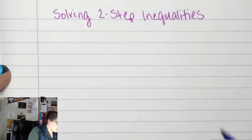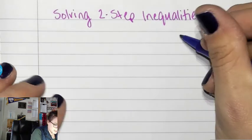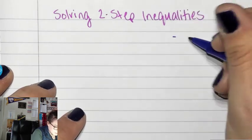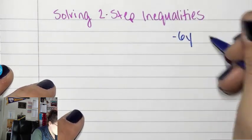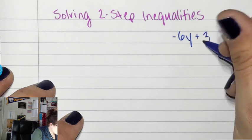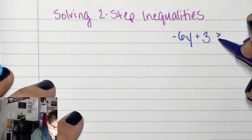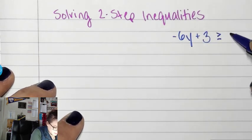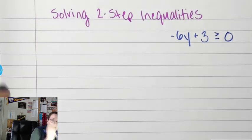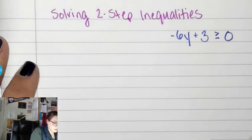If you can solve a two-step equation, you can solve a two-step inequality. They are the same. So if we start with negative 6y plus 3 is greater than or equal to 0, we solve it like an equation.